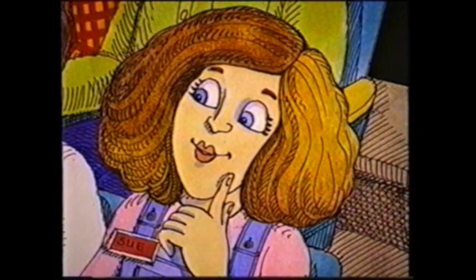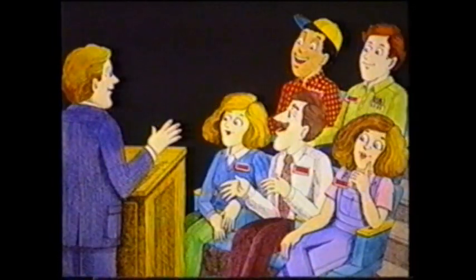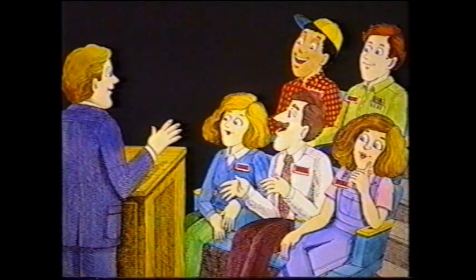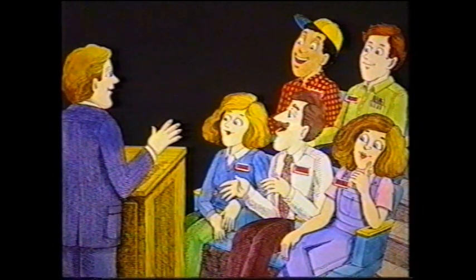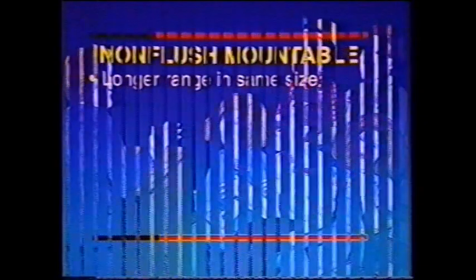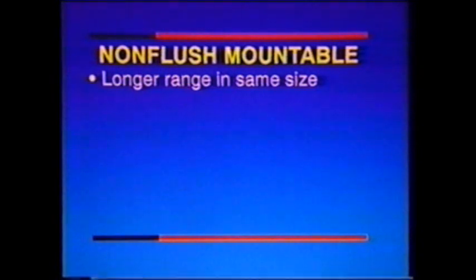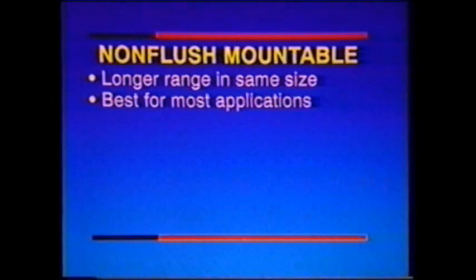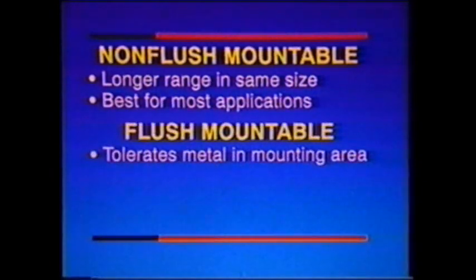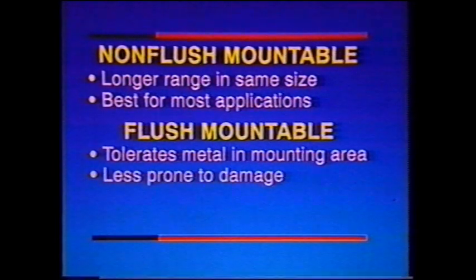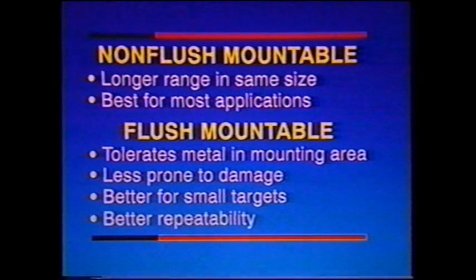Many installations of non-flush switches don't adhere to the metal-free area guidelines because these guidelines are very conservative. In many applications, non-flush switches will work with the metal located closer, but because of pre-damping, they may not give you the same performance in terms of RFI protection, hysteresis, and target detection. Non-flush switches provide the longest range in a given size housing. Flush designs will tolerate metal in the mounting area and are more protected against mechanical damage. Because of their narrower sensing zone, they are also a better choice for small targets and where repeatability is important.